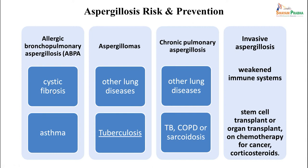Risk factors are important to know for prevention. ABPA is associated with asthma, so proper management can protect against it. Aspergilloma usually occurs in patients with existing lung disease such as tuberculosis. Chronic pulmonary aspergillosis is associated with TB and COPD; these patients need to be investigated accordingly. Invasive aspergillosis mainly occurs in patients with weakened immune systems due to stem cell transplant, organ transplant, chemotherapy, or steroid therapy for cancer treatment.